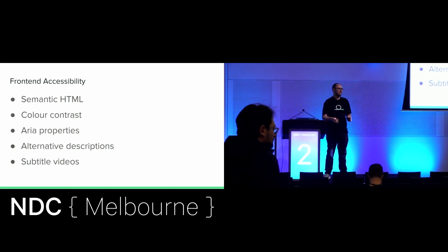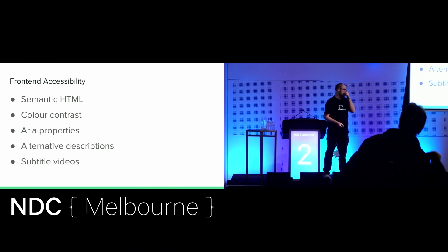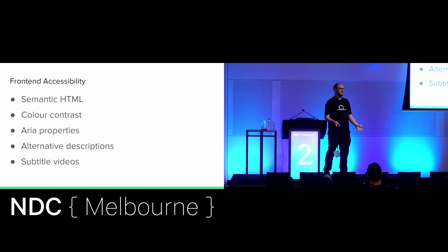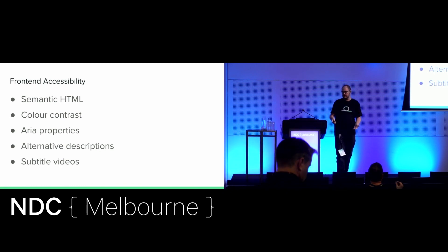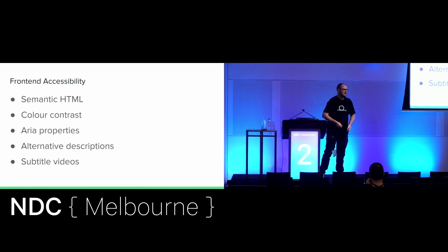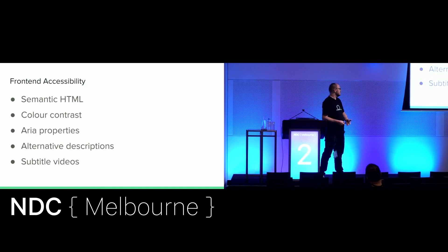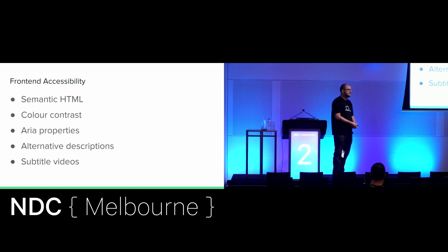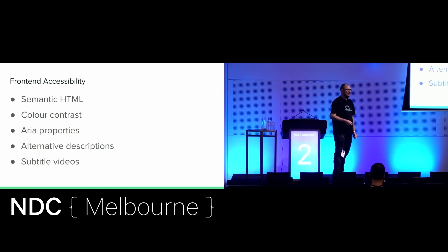Let's talk about accessibility. Most of the talks at conferences that talk about accessibility are talking about front-end accessibility, mostly about web development. So you get a lot of talks about how to correctly use semantic HTML, how to correctly use color contrast, what the ARIA properties mean, what they do, which ones you should use. You get the occasional talk about the accessibility DOM, alternative descriptions in images, subtitling videos. And they're great, they're really interesting.